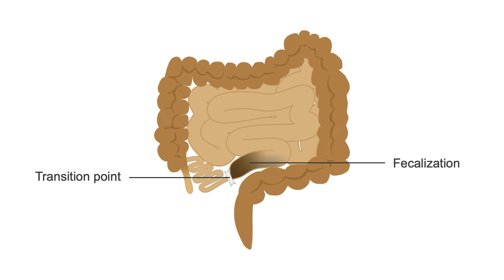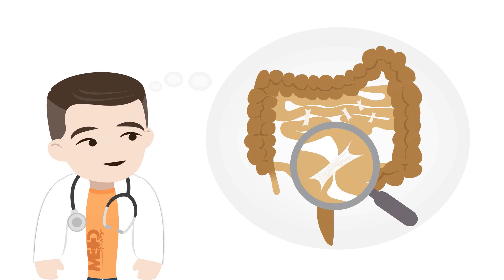Fecalization occurs here because the bowel contents have sat there the longest, and over time the water content becomes resorbed, causing it to take on the appearance of stool. Recall that adhesions are the most common cause of obstruction, but these are not visible on CT. You will have to rely on the dilated small bowel, angled or tapered transition point, and fecalized contents to help you infer their presence.